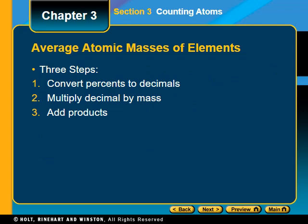There are three basic steps for calculating average atomic mass. First, convert the percent abundance to a decimal by moving the decimal point over two places. Second, multiply that decimal by the mass given for each isotope. Third, add up all the products from step two. If there are two isotopes, you add two numbers; if there are five isotopes, you add five numbers.